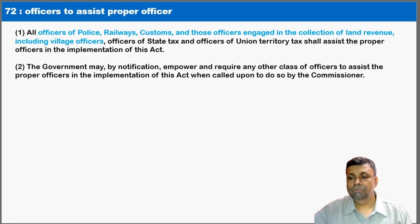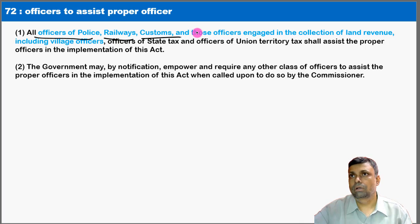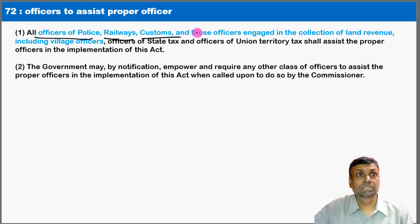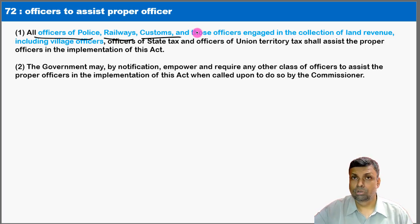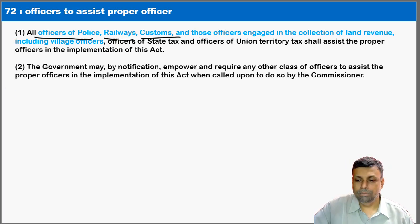The manager on premises is duty-bound to cooperate with tax authorities in providing necessary documents for inspection or audit. Officers of police, railways, customs, and other government departments must cooperate with GST officers when required. For example, in a serious search of a large organization, the local police force can assist GST officers in the search operation.